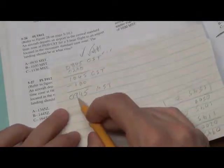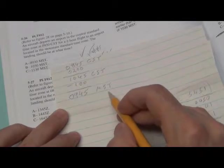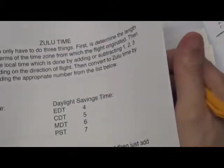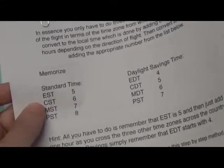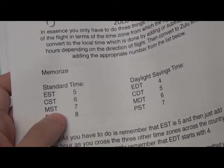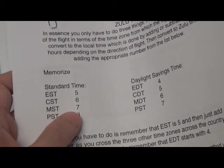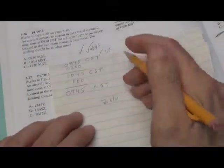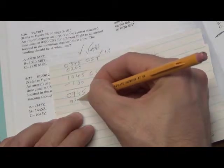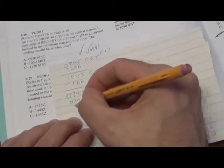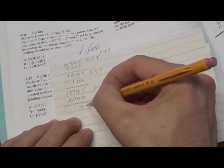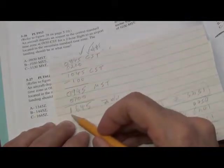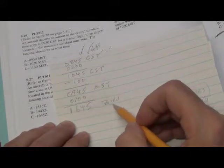So how do we convert 0945 to Zulu time? Here's how we do it. We go back to the chart, go to Standard Time, we're in Mountain Standard Time, so you're going to add seven hours. So you add seven hours to the Mountain Standard Time, and that's 45, that's a six, and that's a one. So the answer should be 1645 Zulu.